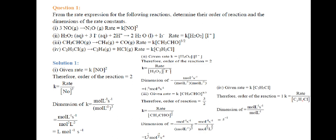Now, dimensions of K for the second order reaction: K = (mole·L⁻¹·s⁻¹) / (mole·L⁻¹)². Simplifying, we get L·mol⁻¹·s⁻¹.